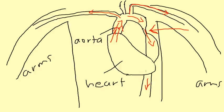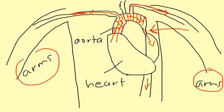So when you take the blood pressure in an arm, it will be high, but if you take it in the lower extremity, it will be lower. That's coarctation of the aorta — high blood pressure in the upper extremities and lower pressure in the lower extremities.